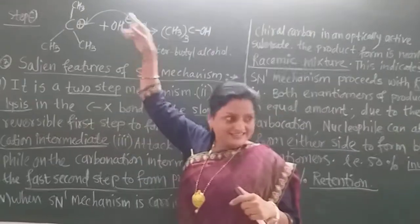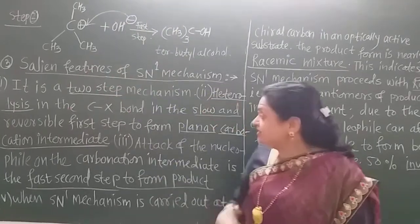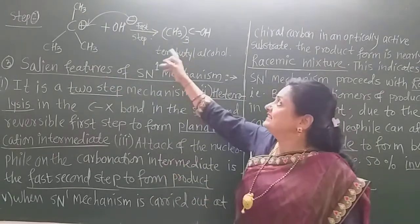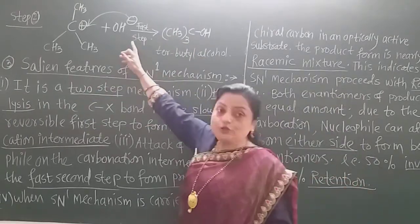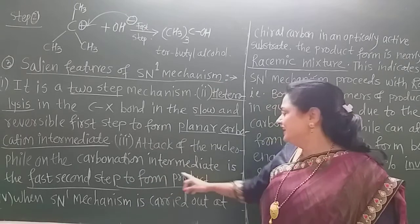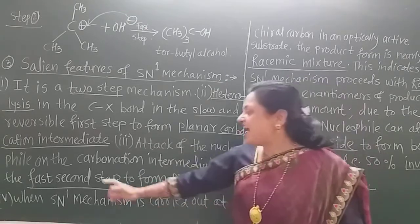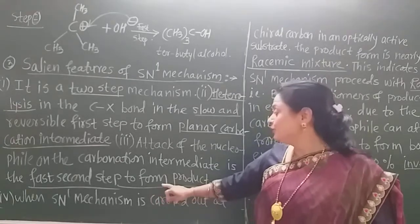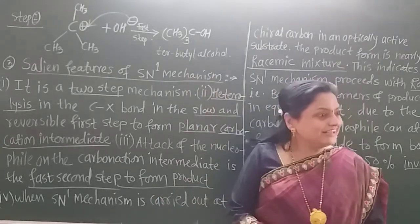In the first step, the planar carbocation is formed. In the second step, the nucleophile attacks on that carbocation intermediate, and in that second step, the product — tertiary butyl alcohol — is formed.